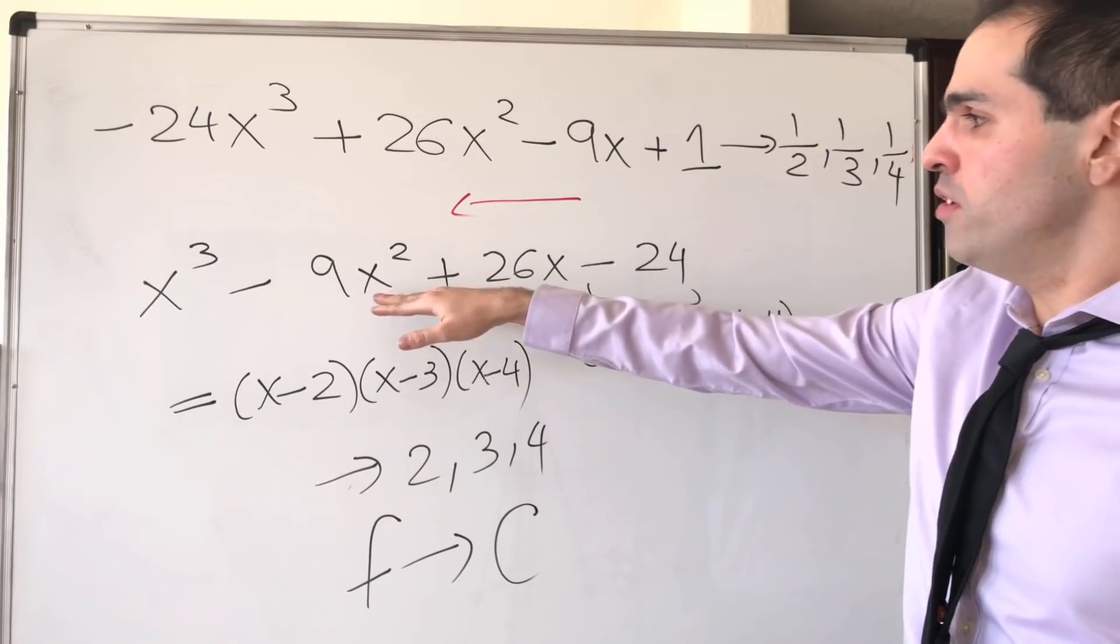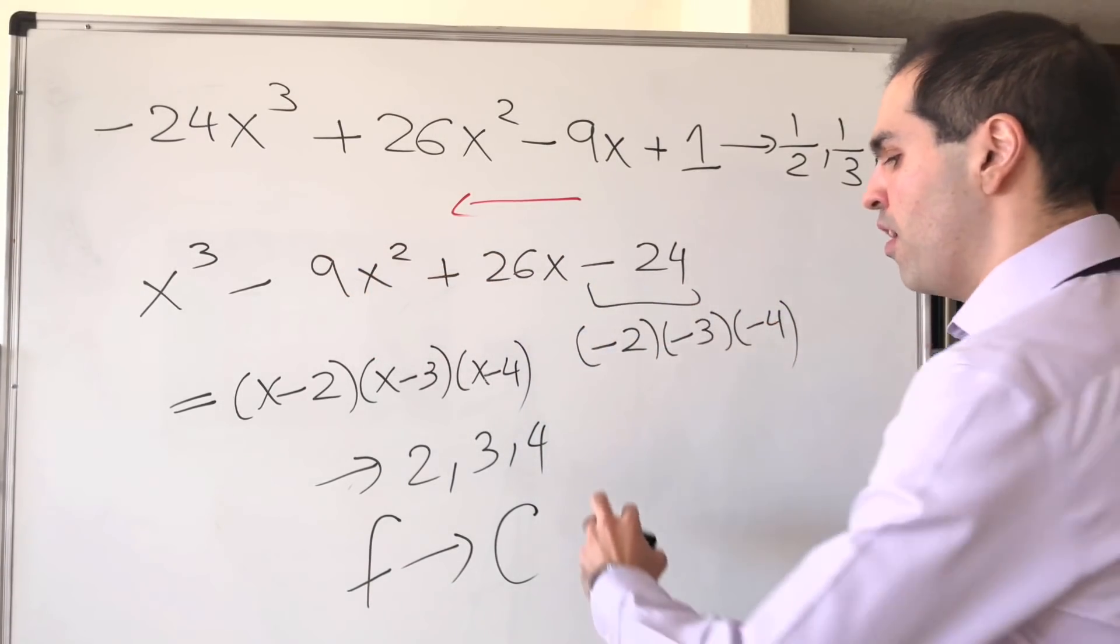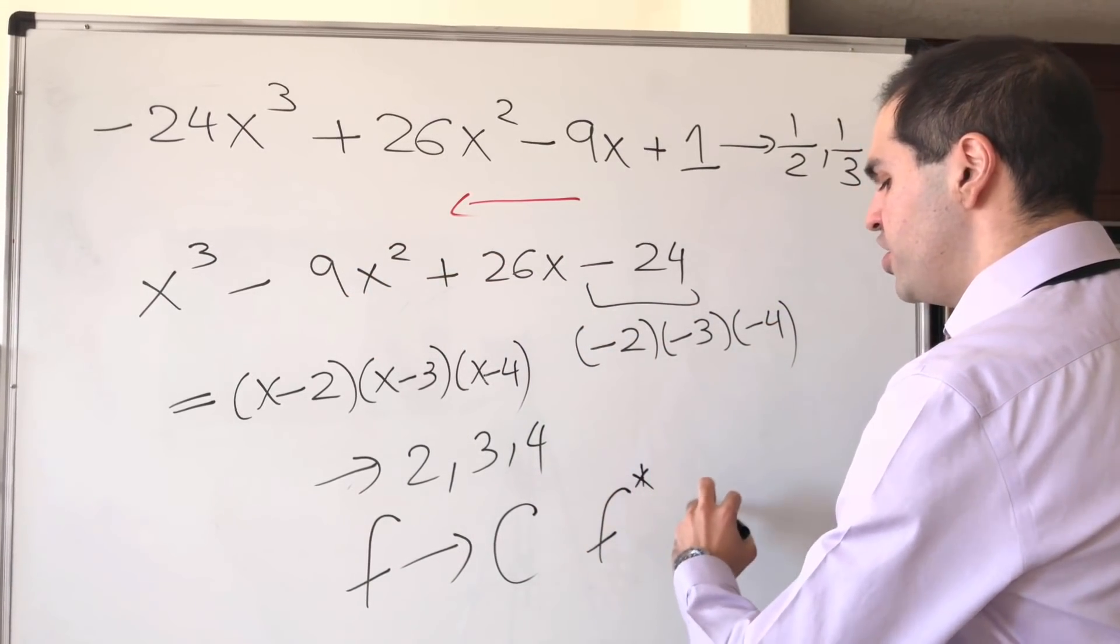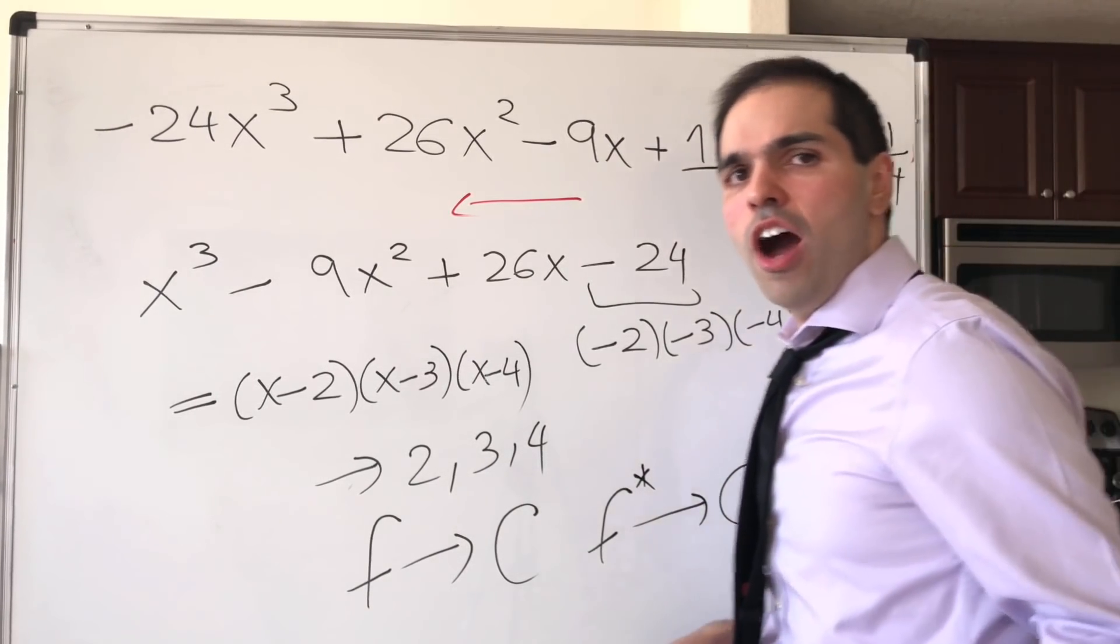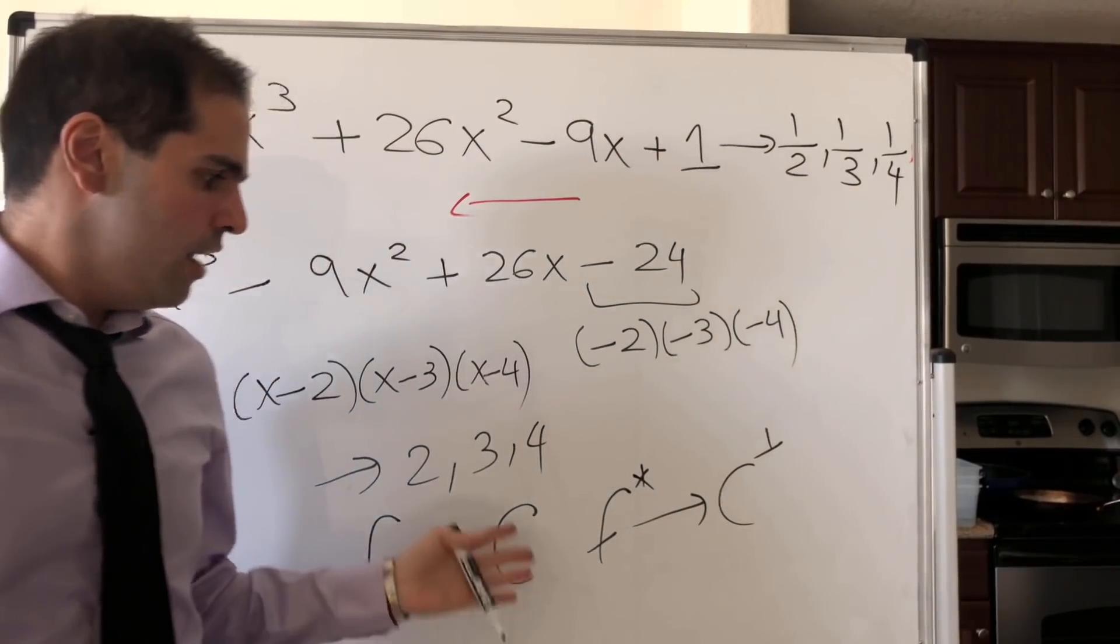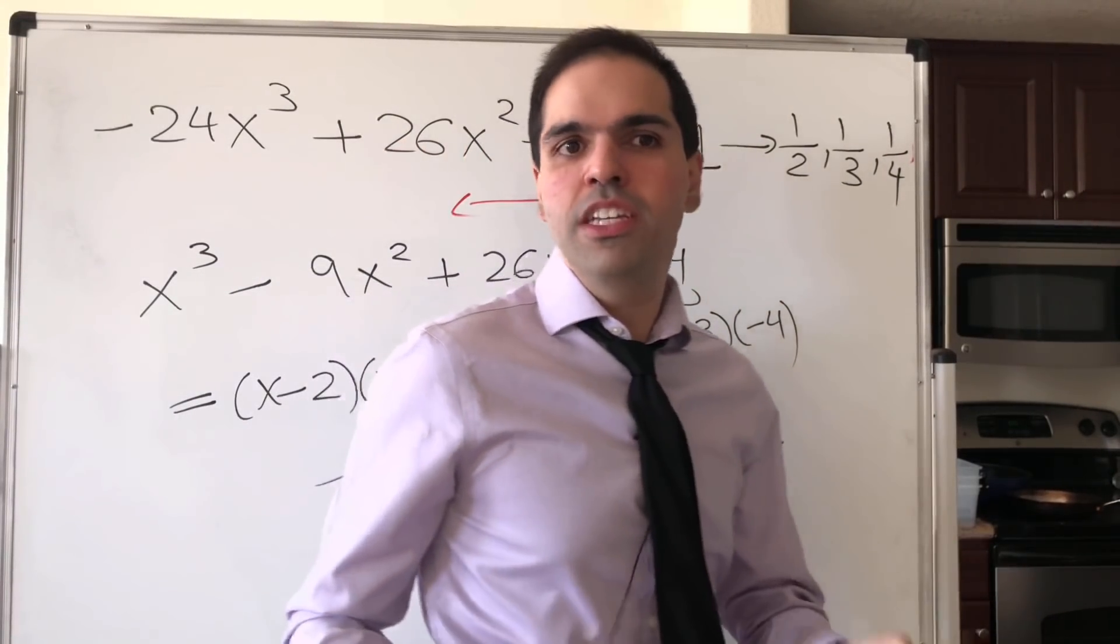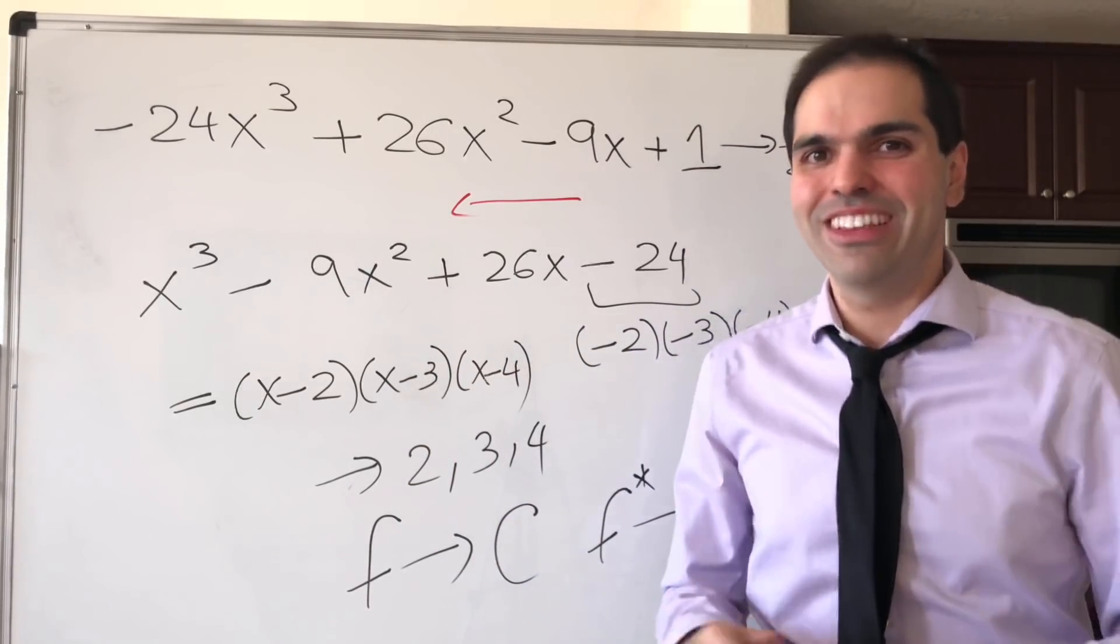then it turns out this reverse polynomial f star generates the cyclic correcting code for the orthogonal complement c perp. And I have no idea what those terms mean, but I hope someone, one of you gets very excited about this.